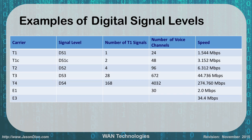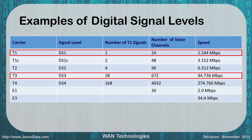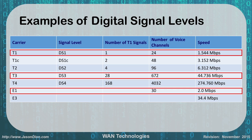Some examples of digital service levels are here on the chart. The main ones you want to know the speeds of are the T1, which is 1.544 megabits per second; the T3, which is 44.736 megabits per second — about 45 is fine; and the E1, which is 2.0 megabits per second. E1 is the European standard. In the States we use the T1 as our basis, which is 1.544.